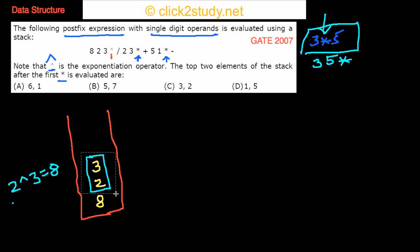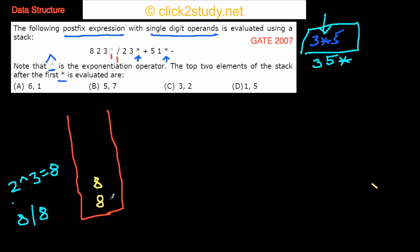I replace the top with 8. The next operator is division. I take the top two elements — both 8 — divide them (8 ÷ 8 = 1), remove those two, and store the result 1. Then I continue: I see 2 (an operand), push it, then see 3 (an operand), push it as well.